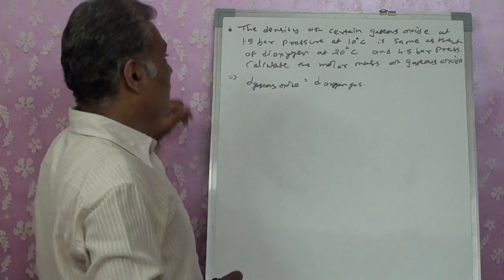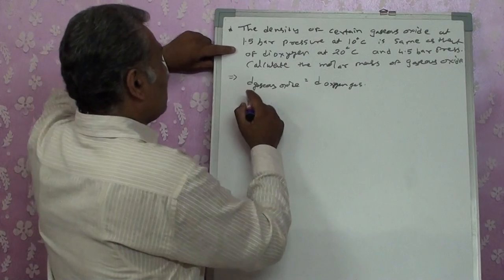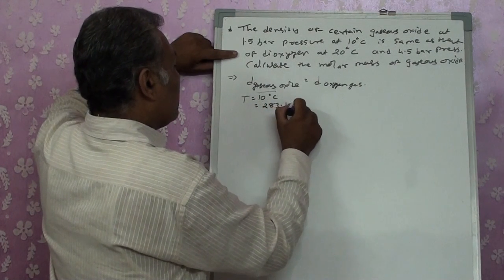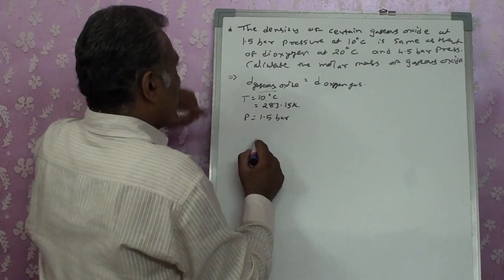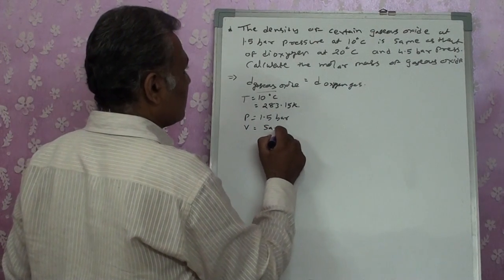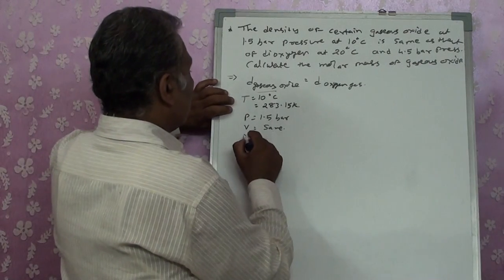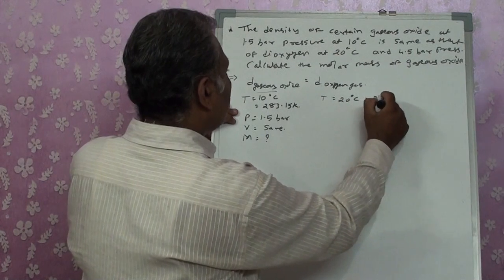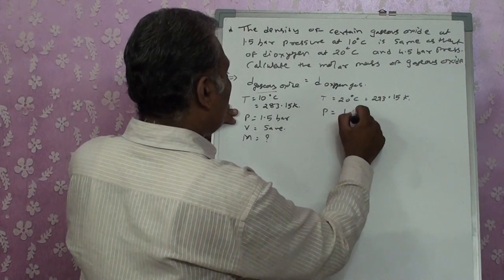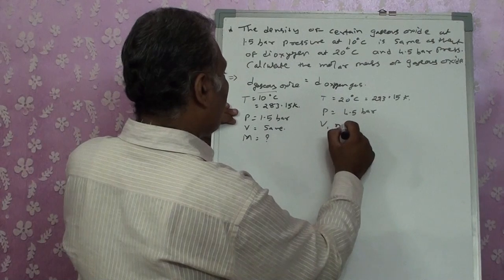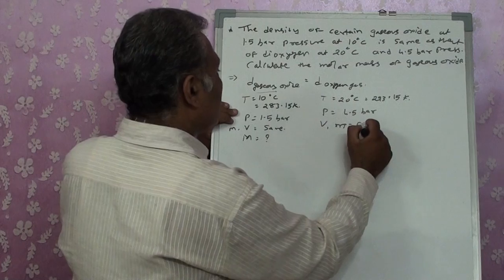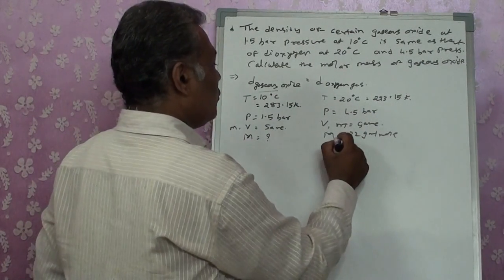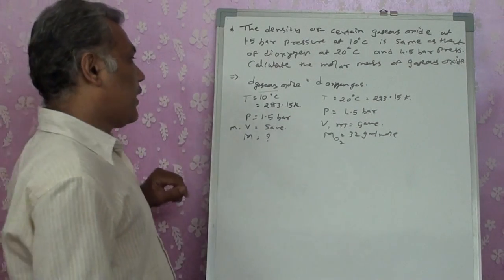We need to calculate the molar mass of the gaseous oxide. It is told that density of the oxide equals the density of O₂. For the gaseous oxide: T = 273.15 + 10 = 283.15 K, P = 1.5 bar. For O₂: T = 273.15 + 20 = 293.15 K, P = 4.5 bar, molar mass = 32 g/mol.